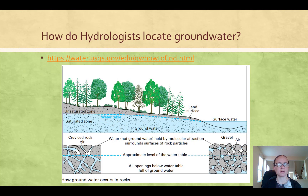A question I often get is: how do hydrologists locate groundwater? We don't get too much into this, but there is a link here if you want to read more. It's not fancy technology — it's a lot of looking at soil characteristics, elevation, and existing wells, or they can drill a test well to see if there's water nearby.